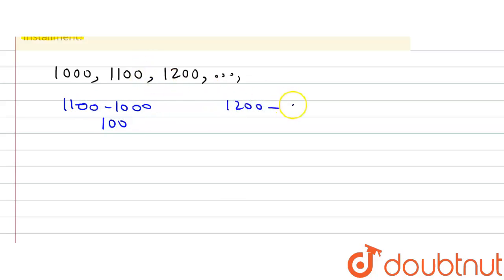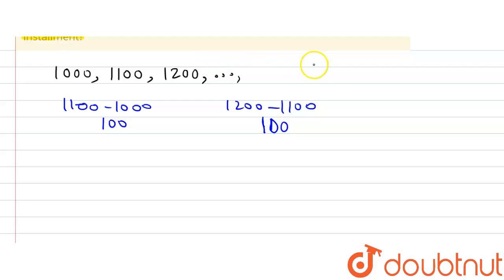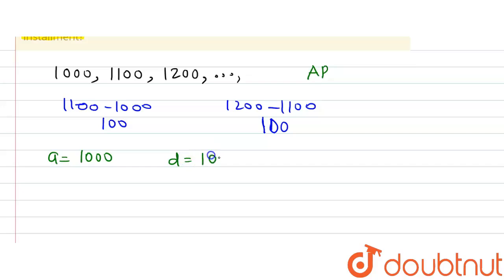The third term minus the second term is Rs. 100, and the second term minus the first term is also Rs. 100. So the common difference is Rs. 100, and we can say this is an AP. The first term A is Rs. 1,000 and the common difference D is Rs. 100.